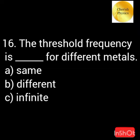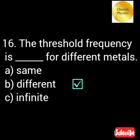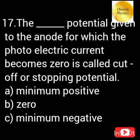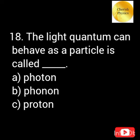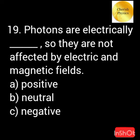How is the threshold frequency for different metals? In stopping potential, what potential is given to the anode for which the photoelectric current becomes zero? The light quantum can behave as a particle is. Why are photons unaffected by electric and magnetic fields?